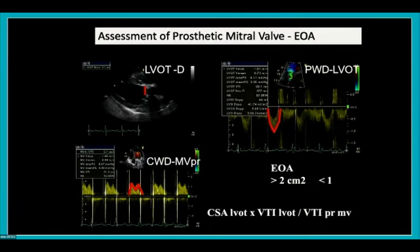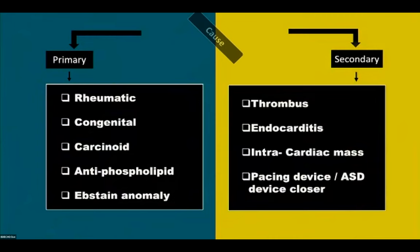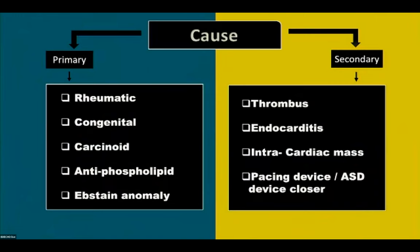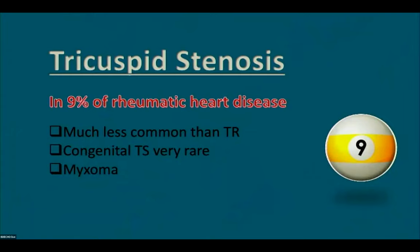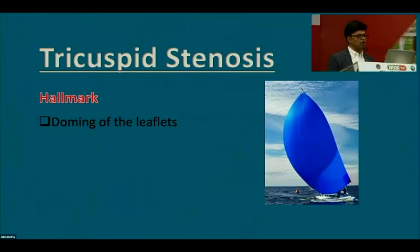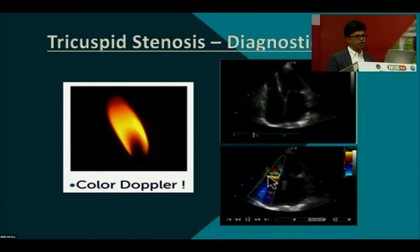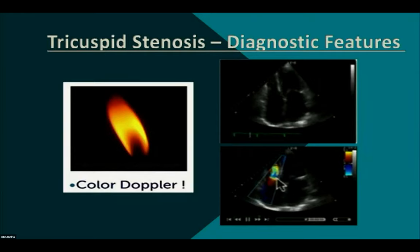What about the tricuspid valve? Tricuspid stenosis causes include: primary — rheumatic, congenital, carcinoid, antiphospholipid syndrome, Ebstein anomaly; and secondary — thrombus, endocarditis, and cardiac masses. Tricuspid stenosis is less common in rheumatic heart disease, following mitral and aortic stenosis. Doming of the leaflet is the hallmark of tricuspid stenosis; the candle-flame sign is another diagnostic feature, and calcification may be present.